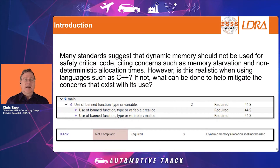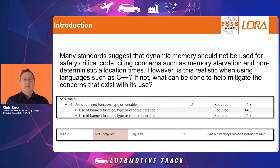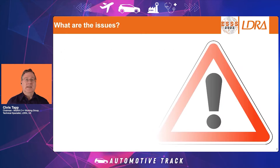As an introduction, there are quite a few standards. The high-level functional safety standards suggest that dynamic memory should not be used when implementing safety-critical code. They often cite concerns such as memory starvation, running out of memory, and the non-deterministic allocation and deallocation times from some memory allocation libraries. However, it's not always that simple. Sometimes it's not realistic when using languages such as C++ to simply say dynamic memory should not be used, because the language itself will use it even if the programmer doesn't put explicit calls to memory allocation within the code.